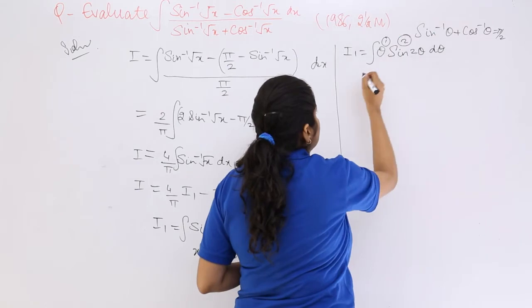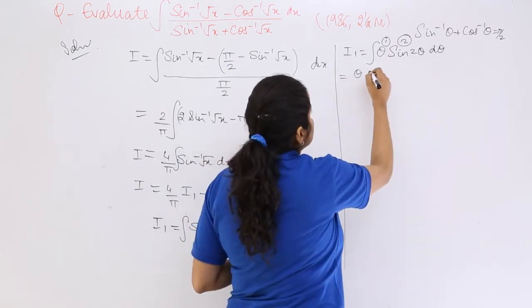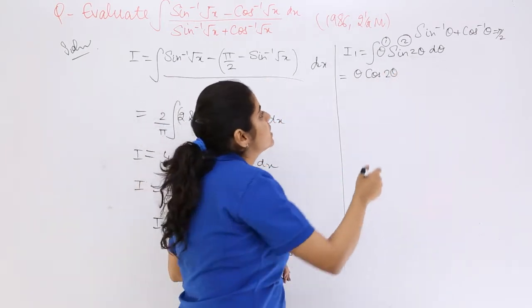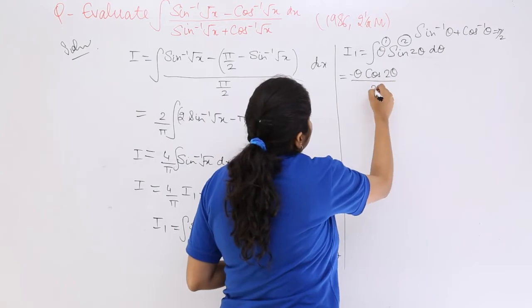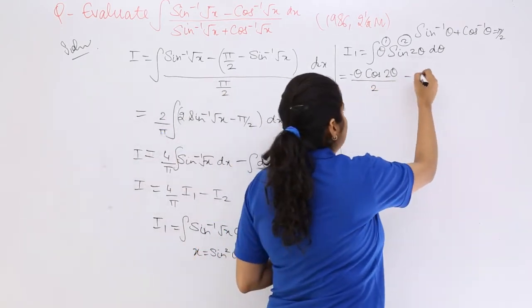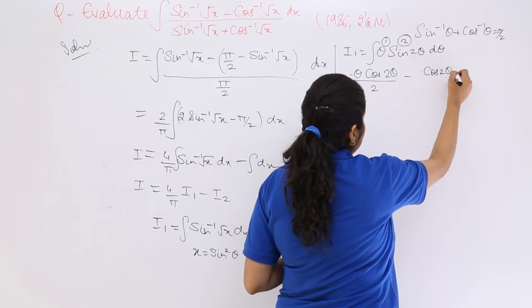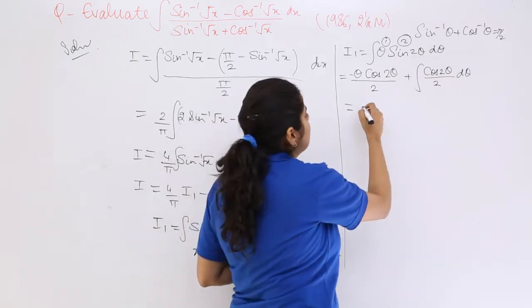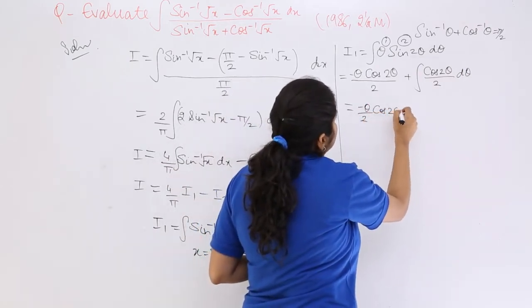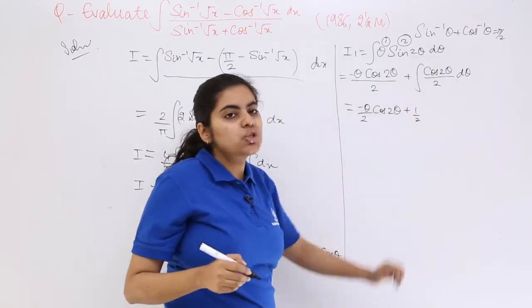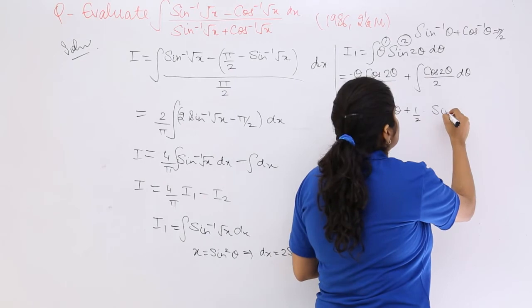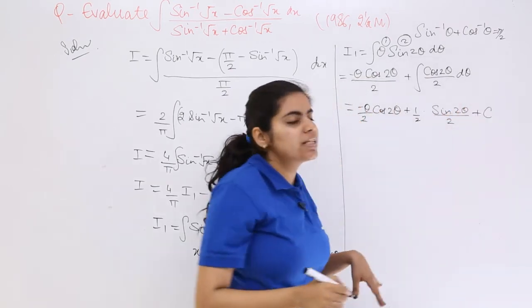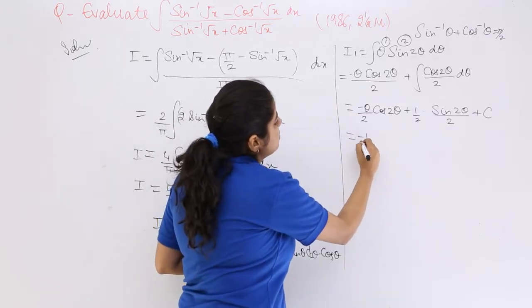Now I'll use integration by parts. If this is the first function and this is the second, how do I integrate? First function times integration of second: sin 2 theta integration is minus cos 2 theta by 2, minus differentiation of first times integration of second, whole integration. So minus theta by 2 cos 2 theta plus 1/2 cos 2 theta integration is sin 2 theta by 2, plus c as the constant of integration.